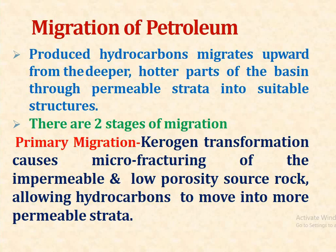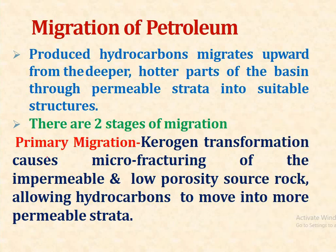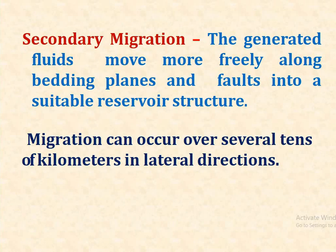There are two stages of migration. The first is primary migration, where kerogen transformation causes micro-fracturing of the impermeable and low-porosity source rock, allowing hydrocarbons to move into more permeable strata. The second is secondary migration, where the generated fluids move more freely along bedding planes and faults into a suitable reservoir structure.